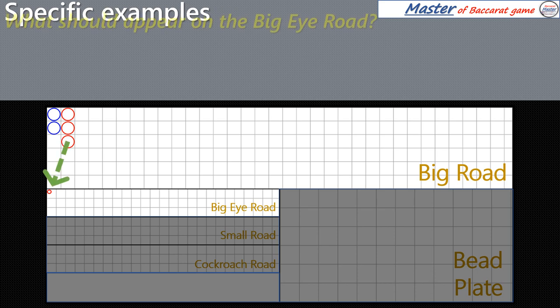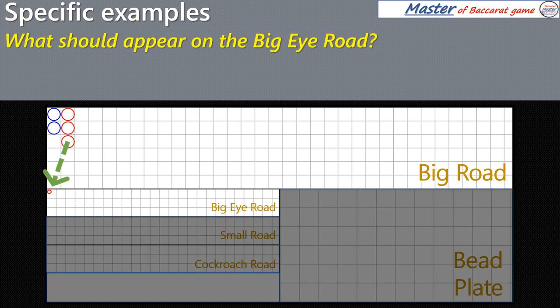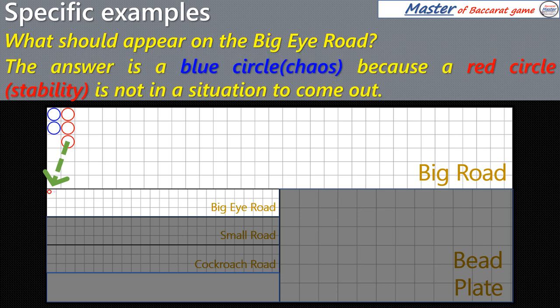What should appear on the Big Eye Road? The answer is a blue circle, because a red circle is not in a situation to come out.